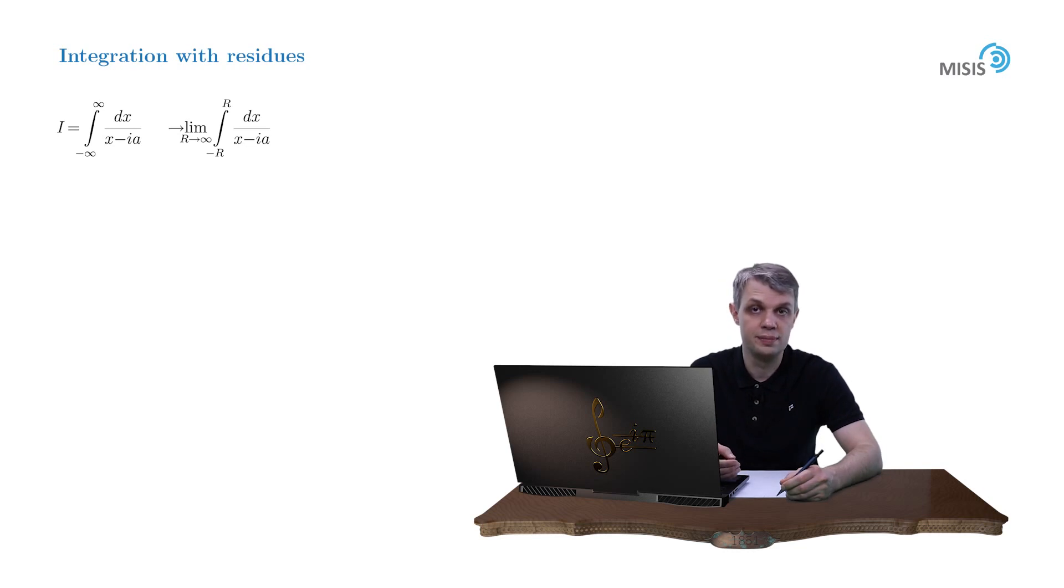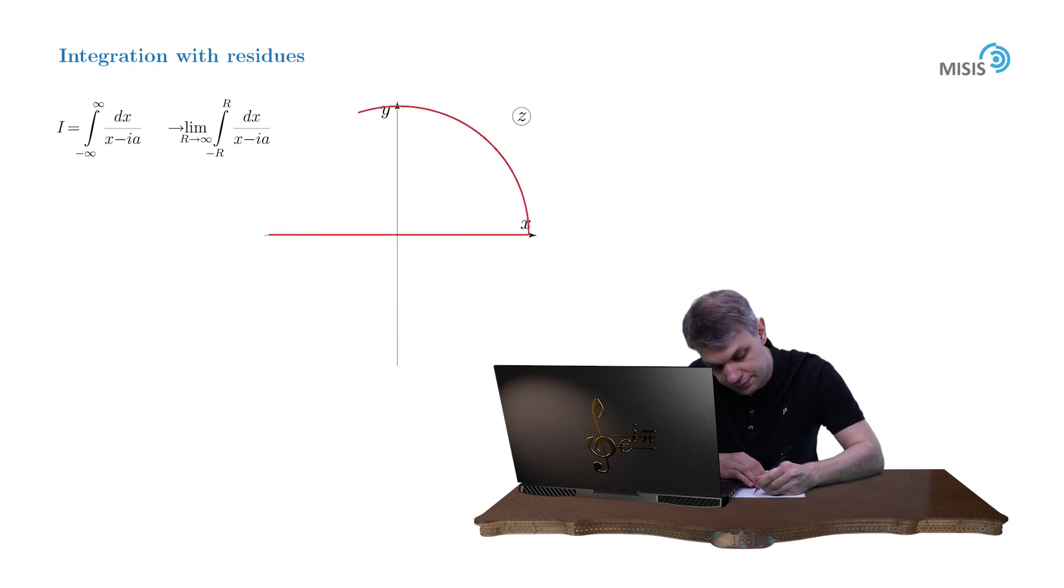The residue theorem always means a closed contour. So let us close this contour, say with an upper semicircle of infinite radius r. And of course, I hope that the completion of our contour with this arc doesn't change the value of the integral. So let us perform a simple estimate of this arc integral.